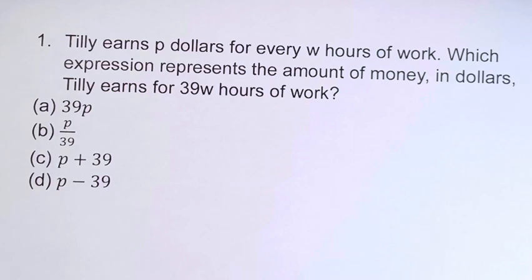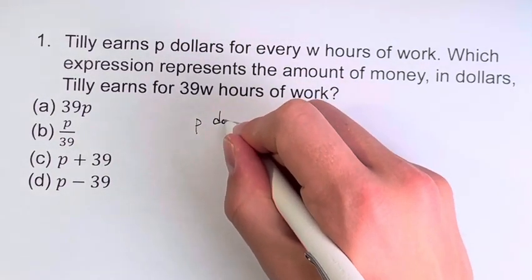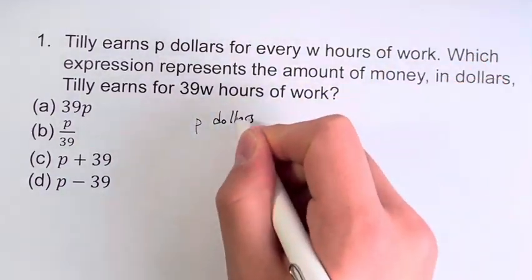So the easiest way to do this, formally, is to do a unit conversion. We know that Tilly earns P dollars for W hours.